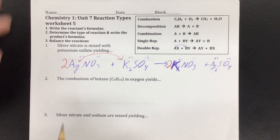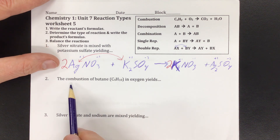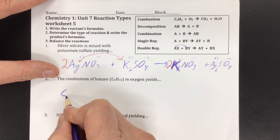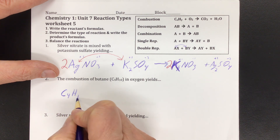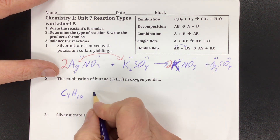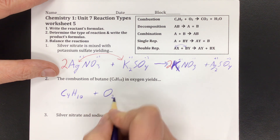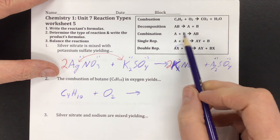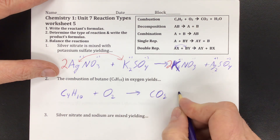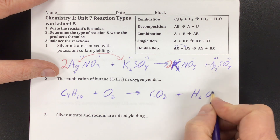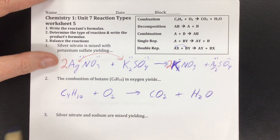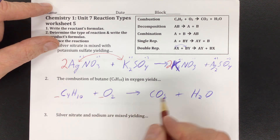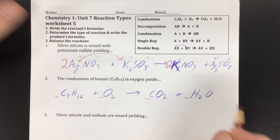This one outright tells you the type of reaction — it's the combustion of butane, C4H10, in oxygen. Combustion is always some carbon-hydrogen fuel with oxygen, and it's always going to yield CO2 and water. I'll leave you to do the balancing to put the coefficients out front to decide how many of each you have.